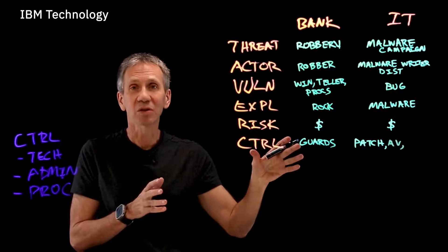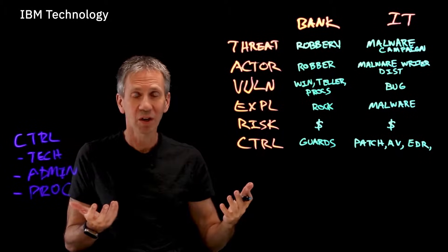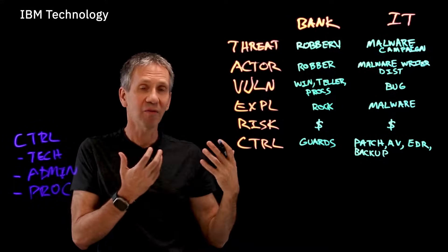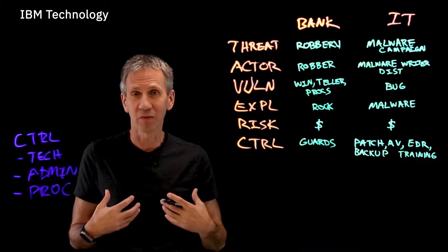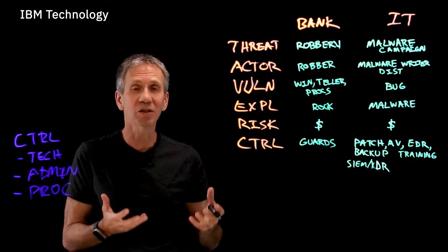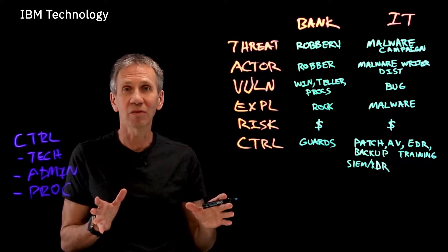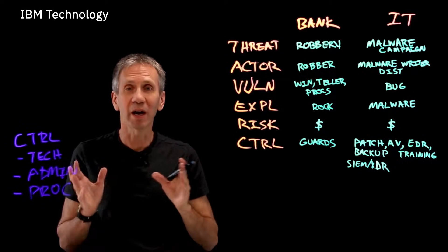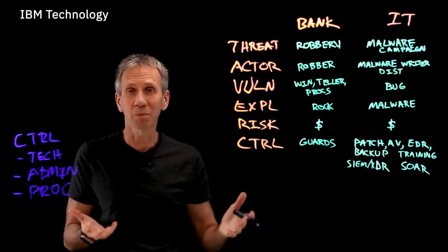A technical control includes things like patching all software, putting antivirus on systems, using an endpoint detection and response (EDR) system, and implementing a backup system to recover compromised data. User training is also important so users don't click phishing links. We could also deploy a SIEM — security information and event management system — or an XDR, extended detection and response system, which acts like an alarm system enabling investigation across the IT environment.